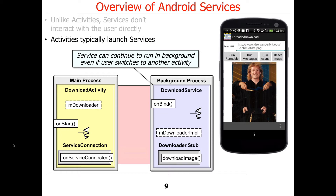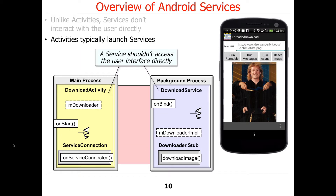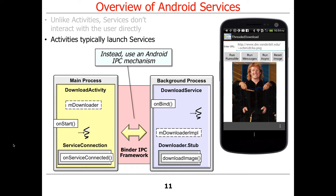The service will keep running even if the activity changes. The service should not access the user interface directly — only the activity should be interacting with the user. To pass information from the service back to the activity, you use some kind of inter-process communication mechanism. For example, in assignment four, the service will download an image file and pass back to the client activity the path to the downloaded file, which the activity will then pick up and display.